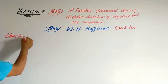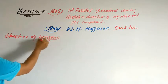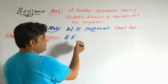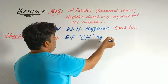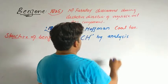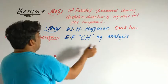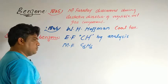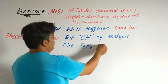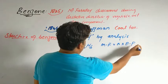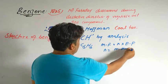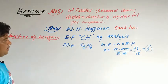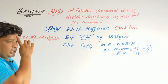The next very important topic is the structure of benzene. What is the structure of benzene? First, when the formula of benzene was derived — the empirical formula by elementary analysis — it was found to be CH. Then from this empirical formula, the molecular formula was obtained: C6H6. N was calculated as molecular mass divided by empirical mass, that is 78 divided by 13, which equals 6. When N is multiplied by the empirical formula, the molecular formula C6H6 is obtained.